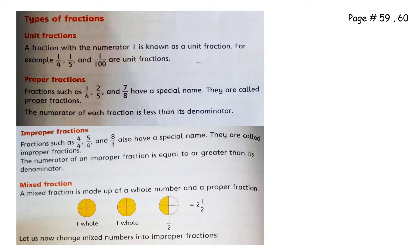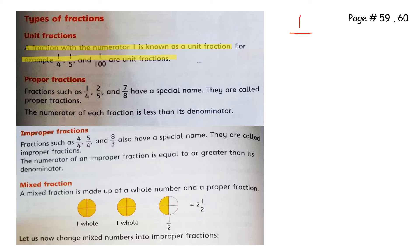The first definition is: what is a unit fraction? A fraction with numerator 1 is known as a unit fraction. For example, 1 by 4, 1 by 5, 1 by 100 are all unit fractions. When the numerator is 1 and the denominator is whatever it is, that fraction is called a unit fraction.